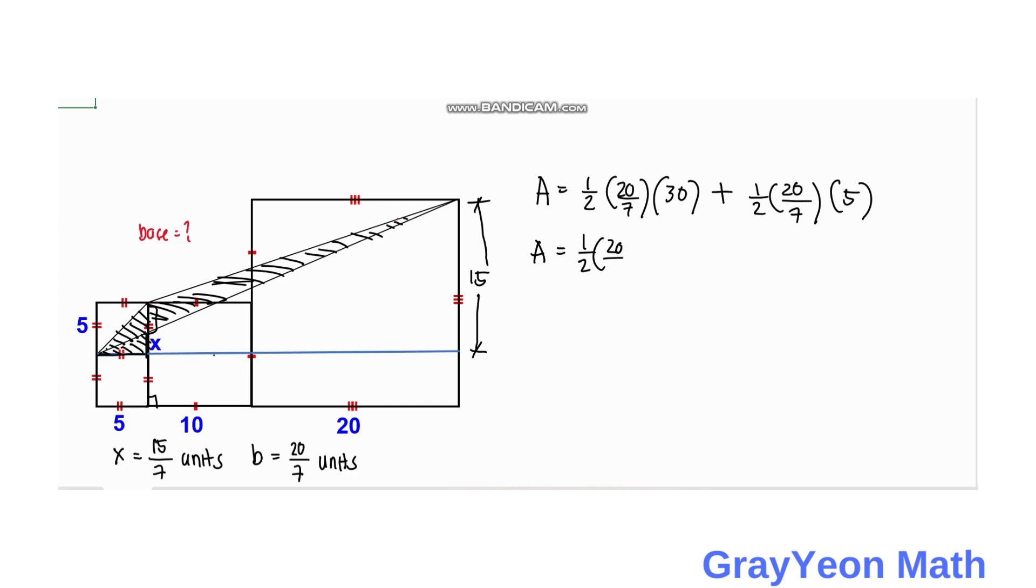We can factor out the one-half and 20 over 7, multiplied by 30 plus 5. This becomes 35. 35 divided by 7 equals 5, and 20 divided by 2 equals 10. So area equals 5 times 10, which equals 50 square units.